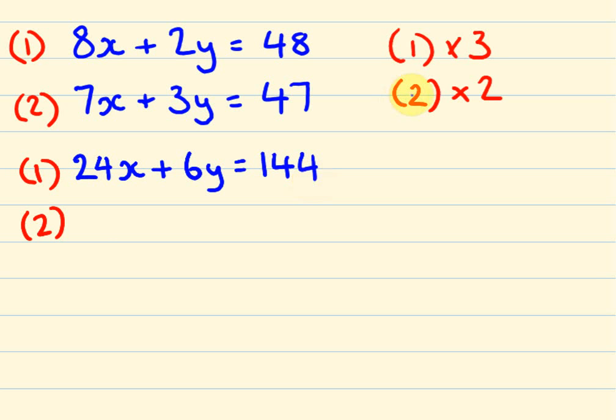Okay, so we're going to multiply equation 2 by 2. 7 times 2 is 14X plus, we're going to multiply this by 2, we're going to get 6Y and 47 times 2 which is 94.